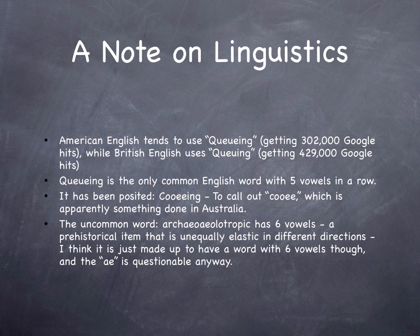As a brief distraction, it is said that 'queuing' is the only common word with five vowels in a row. There is a made-up word — though all words are made up by somebody — 'archaolootropic,' which has six vowels in a row. But you don't use that very commonly. You might not use the word 'queuing' very commonly yet, but you'll start to use it a lot. This was just a brief side note.